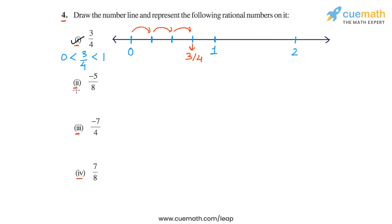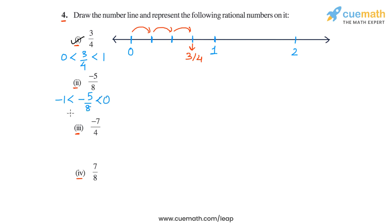Coming to part 2, we have to plot minus 5 by 8. We note that minus 5 by 8 is negative, but its magnitude, which is 5 by 8, is less than 1. This means that minus 5 by 8 lies between the integers minus 1 and 0.